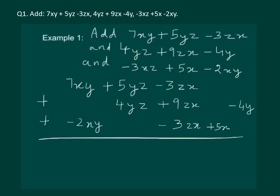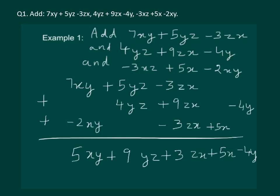Let's try and add it. We have minus 4y and there is no other like term with it, so no issues. On adding the zx terms, we get plus 3zx. On adding the yz terms, we get 9yz. And on adding the xy terms, we get 5xy. Hence, 5xy plus 9yz plus 3zx plus 5x minus 4y is the required answer.